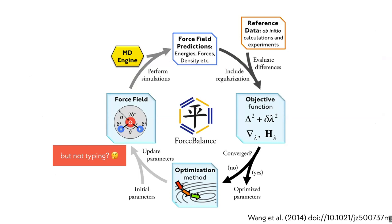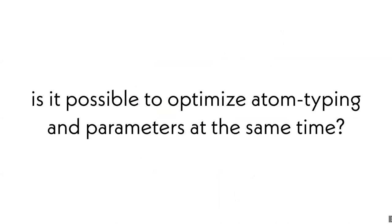There's only one problem, or maybe two, for this wonderful scheme: although you optimize very aggressively the force field parameters, you're not optimizing the typing scheme of force field parameters, which means you need to start with a decent enough force field. A lot of the force field, especially small molecule force fields that people are using right now, started from development in the 1990s. So it is of our interest to ask the question: is it possible to optimize atom typing and the parameters at the same time?